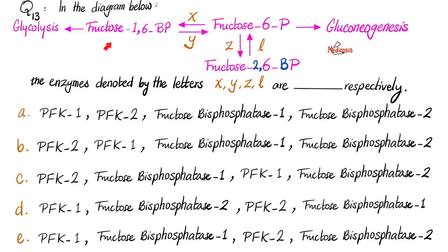Next: here's a diagram with many chemicals, and on the arrows there are several enzymes denoted as X, Y, Z, and L. The question is, the enzymes denoted by these letters are what, respectively? PFK1 stands for phosphofructokinase 1, and PFK2 stands for phosphofructokinase 2. Please pause and try to answer this.